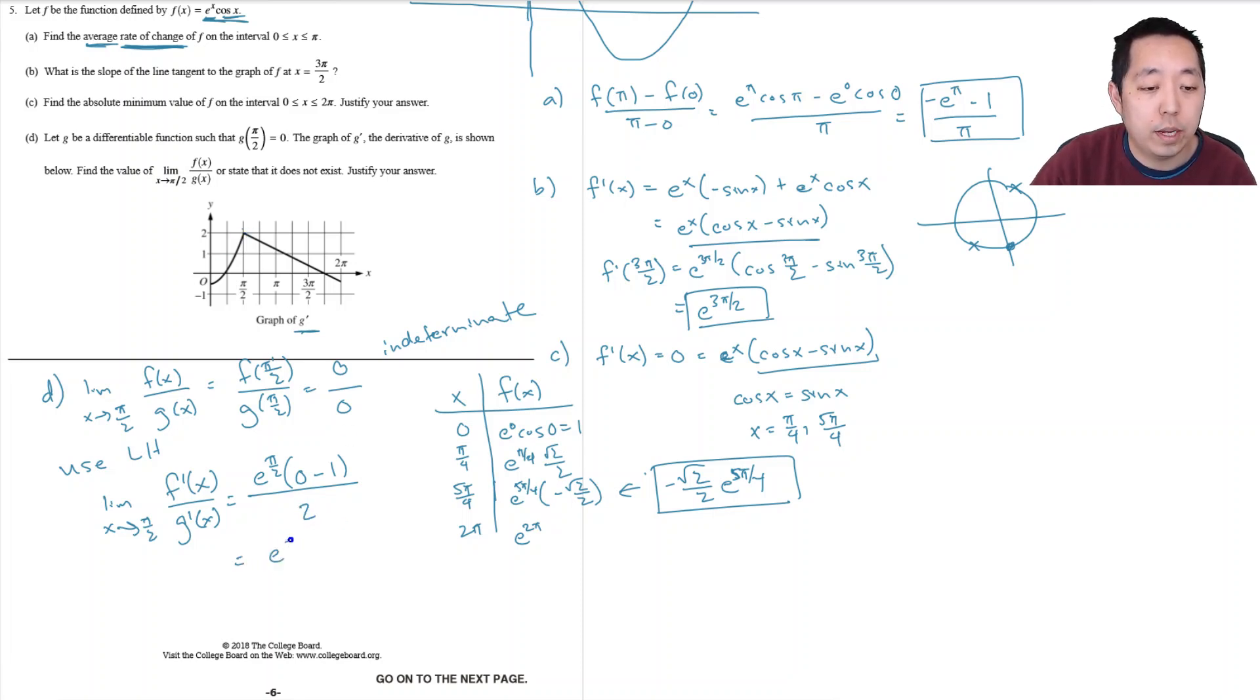So I get e to the pi over 2, negative over 2. And that completes that one.